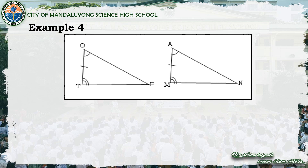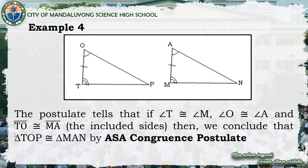First example: triangle TOP and triangle MAN. Based on the marks, if angle T is congruent to angle M, angle O is congruent to angle A, and side TO is congruent to side MA — those are the included sides — then triangle TOP is congruent to triangle MAN by ASA congruence postulate. For triangle TOP, the included side TO lies between angles O and T; for triangle MAN, the included side MA lies between angles A and M.